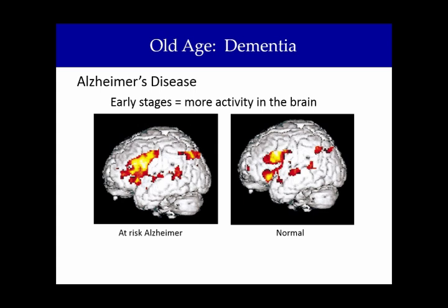You see more of the hot yellow colors in the person who's at risk and hot yellow and white are associated with more brain activity. You also see a wider swath of the brain being used for solving the same kind of problem as the normal person uses less brain matter.